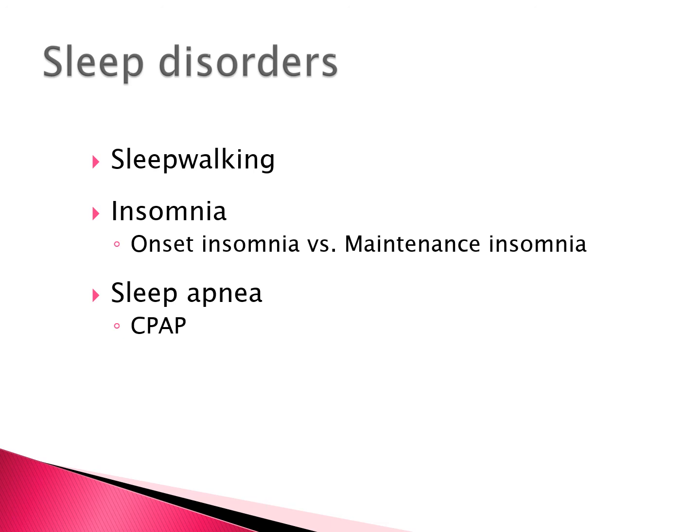Onset insomnia involves difficulty falling asleep due to a phase delay. Maintenance insomnia involves a phase advance in circadian rhythms — these people feel very tired around 7:30 PM and want to go to sleep, but know they'll wake up at around 4:30 AM. They try to push through, but still tend to wake up very early and cannot get back to sleep.